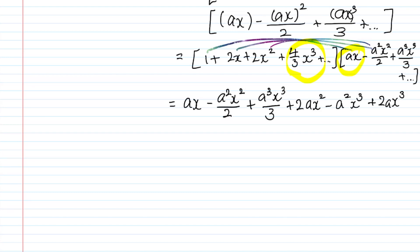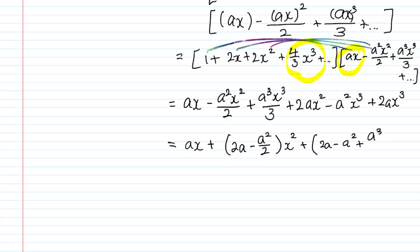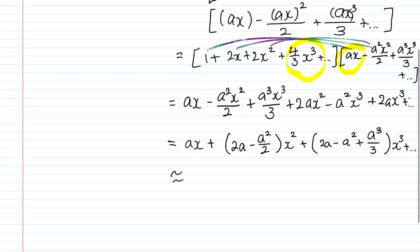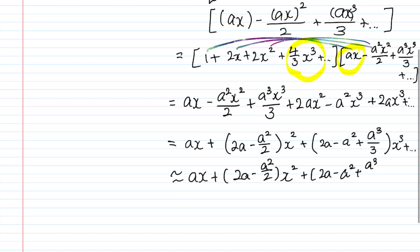Grouping by powers of x: the x term is ax; the x² term is (2a − a²/2)x²; the x³ term is (2a − a² + a³/3)x³, plus dot dot dot. If you want to write it as an estimate using the approximation symbol, you can drop the '+ ...' and write it with a squiggly equals sign, meaning the Maclaurin series is truncated here.